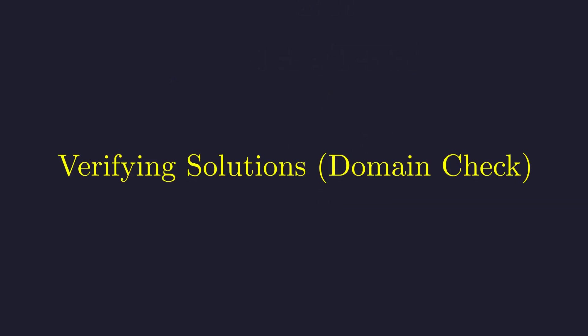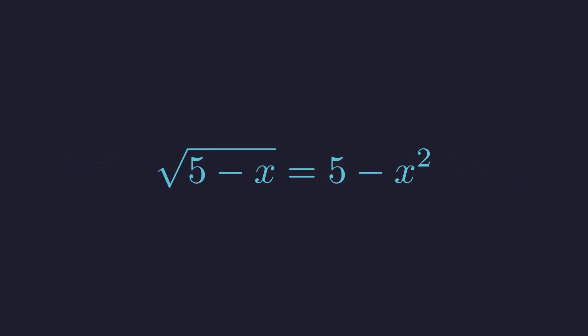Crucially, we must check if these solutions are valid. Not all solutions we find will work in the original equation, especially after squaring. Remember, our original equation has constraints. This implies that x must be between negative square root of 5 and positive square root of 5. Let's check our solutions against these constraints.